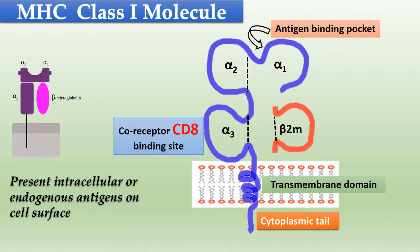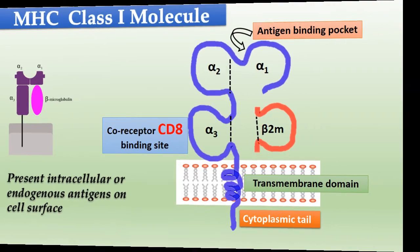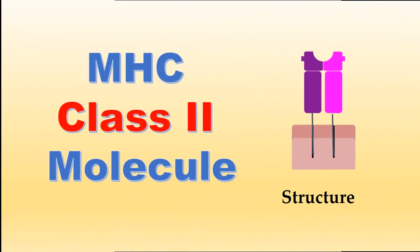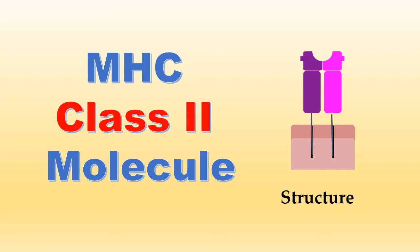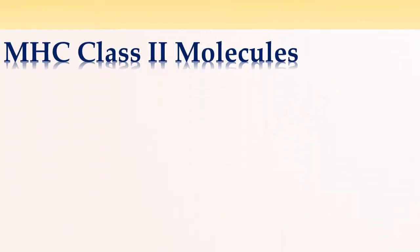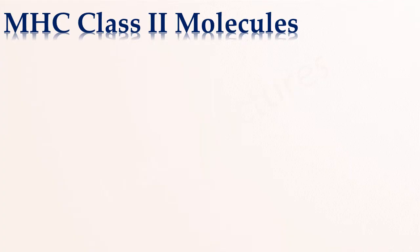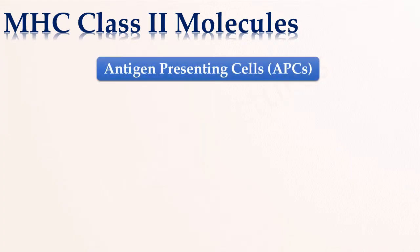We have studied the structure of MHC class 1 molecule in a previous video lecture. Let's now study the structure of MHC class 2 molecule. Class 2 MHC molecules are present on special cells which are known as antigen-presenting cells, abbreviated as APCs.